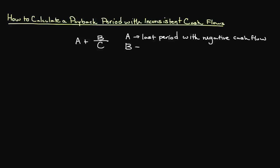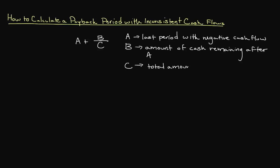B represents the amount of cash that is remaining at the end of A. C represents the total amount of cash generated in the period immediately following A. If this is still somewhat unclear, that's okay — it'll make a lot more sense once we work through a problem.